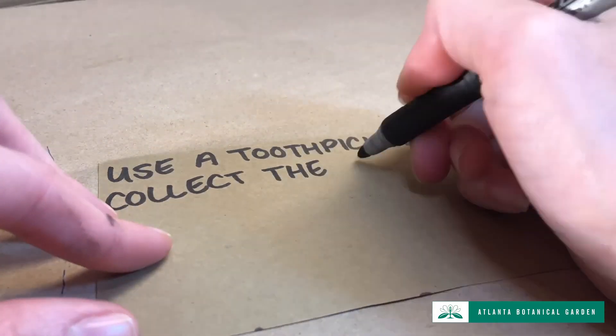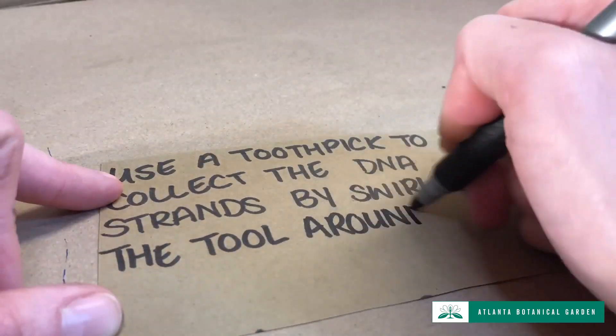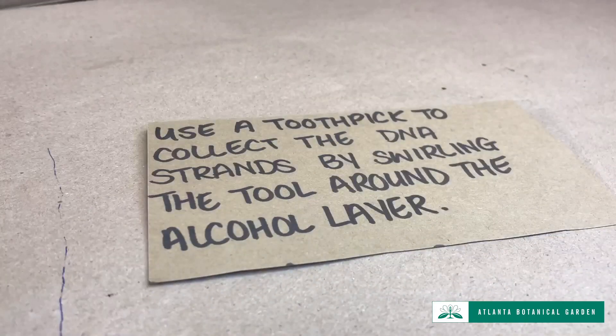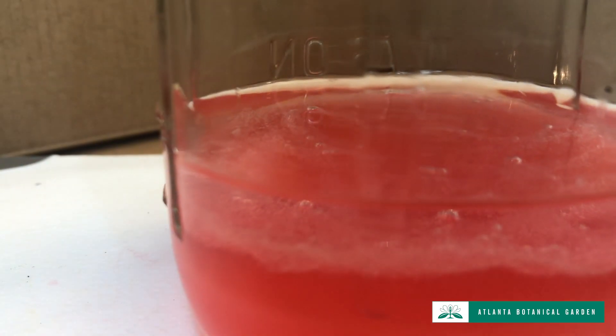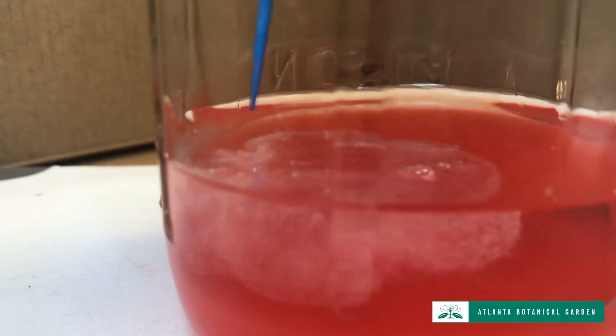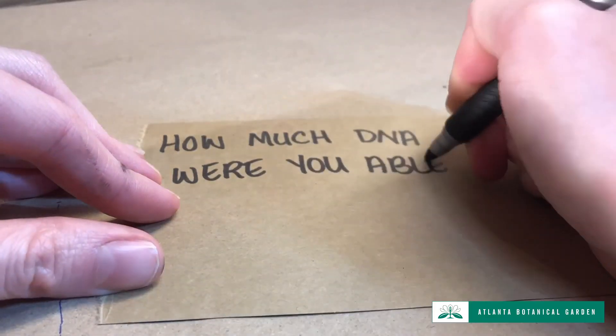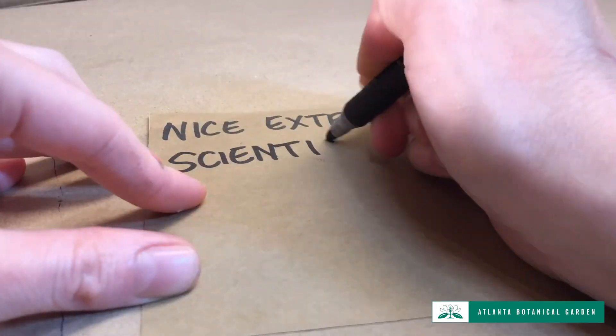Use a toothpick to collect the DNA strands by swirling the tool around an alcohol layer. How much DNA were you able to collect? Nice extraction, scientist! Nicely done.